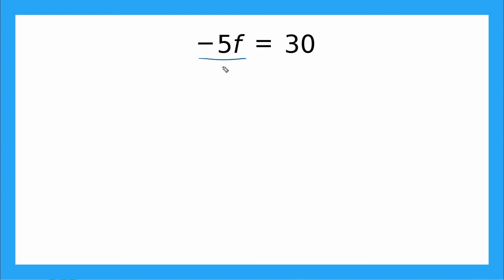Again, I'm going to use that fraction and divide by negative five on both sides. Negative 5F divided by negative five gives me just one, so I have one times F. I can write that as just F is equal to 30 divided by negative five, which gives me negative six as my answer.